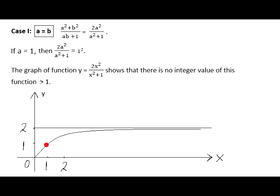Let's examine the simple case first, when A equals B. In this case, the formula given in this problem is simplified to 2A squared over A squared plus 1. And the graph of this function shown on the screen proves that the only integer value of this function is 1. This proves that the statement of this problem holds in this case.